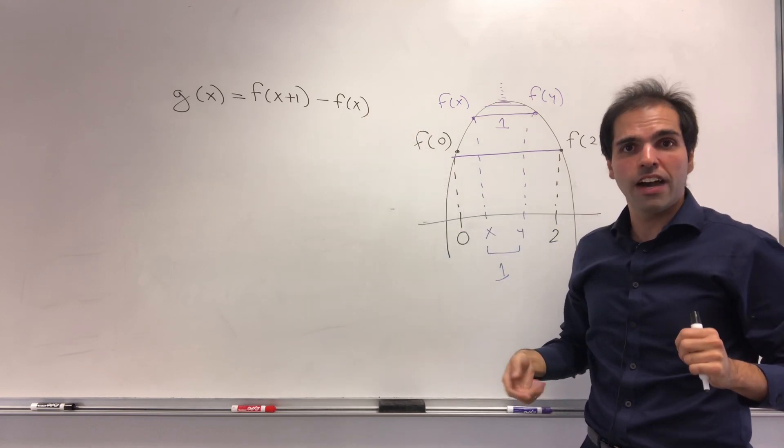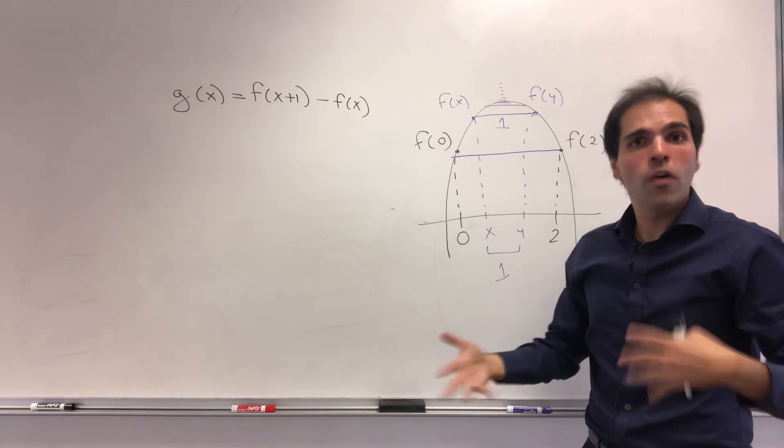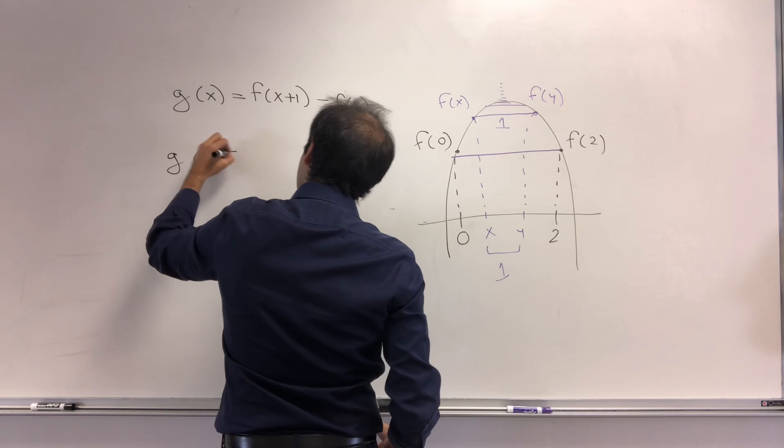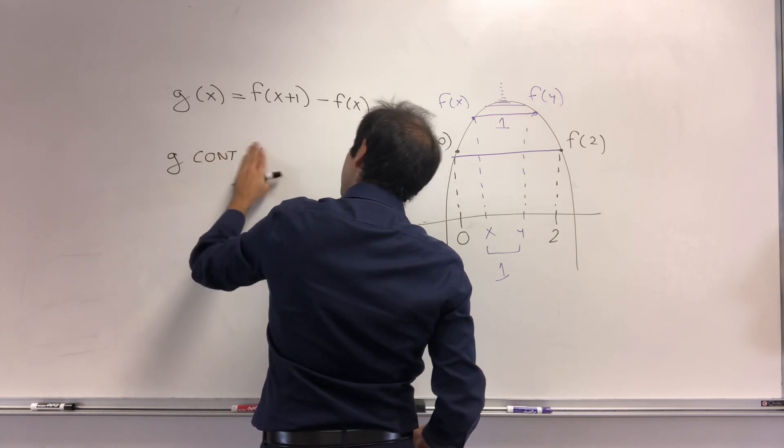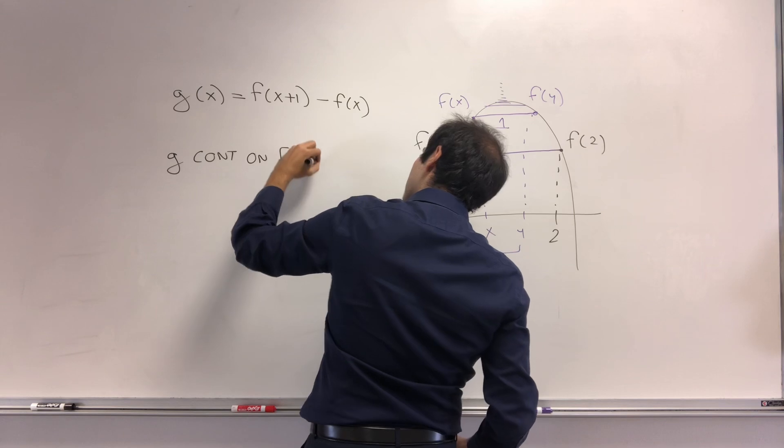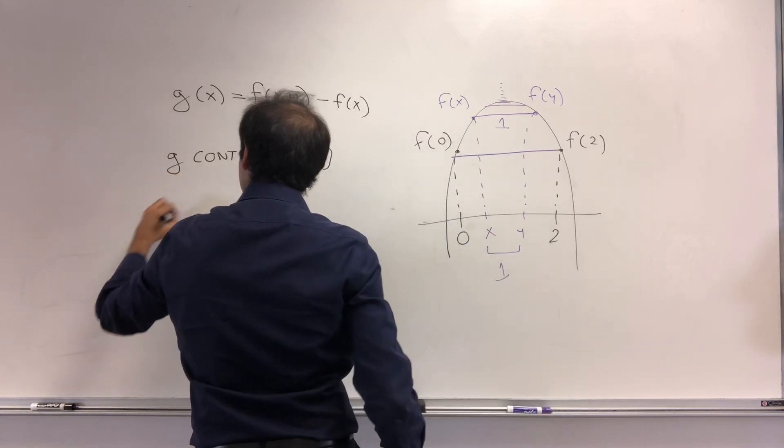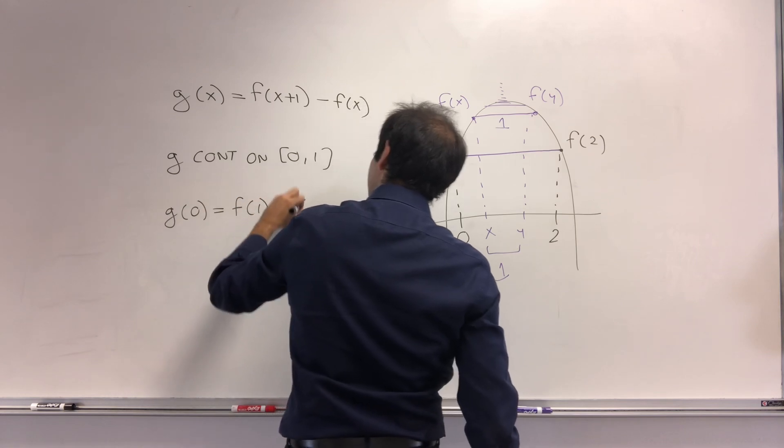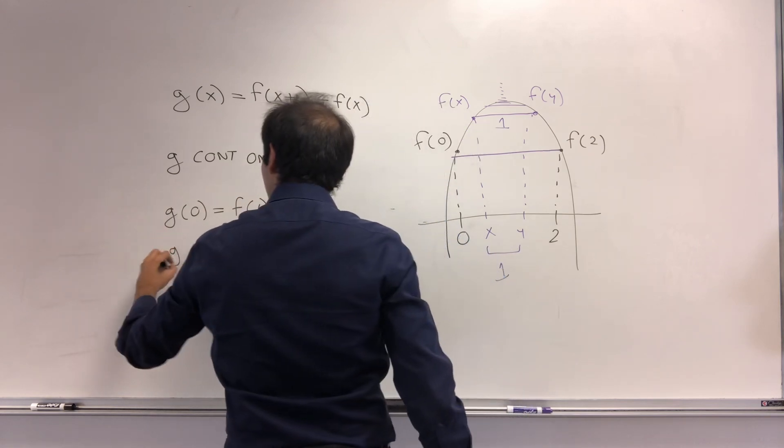For this, we just need two specific values: g(0) and g(1). So g is continuous on [0,1]. Now look at g(0), which is f(1) - f(0). And g(1)...